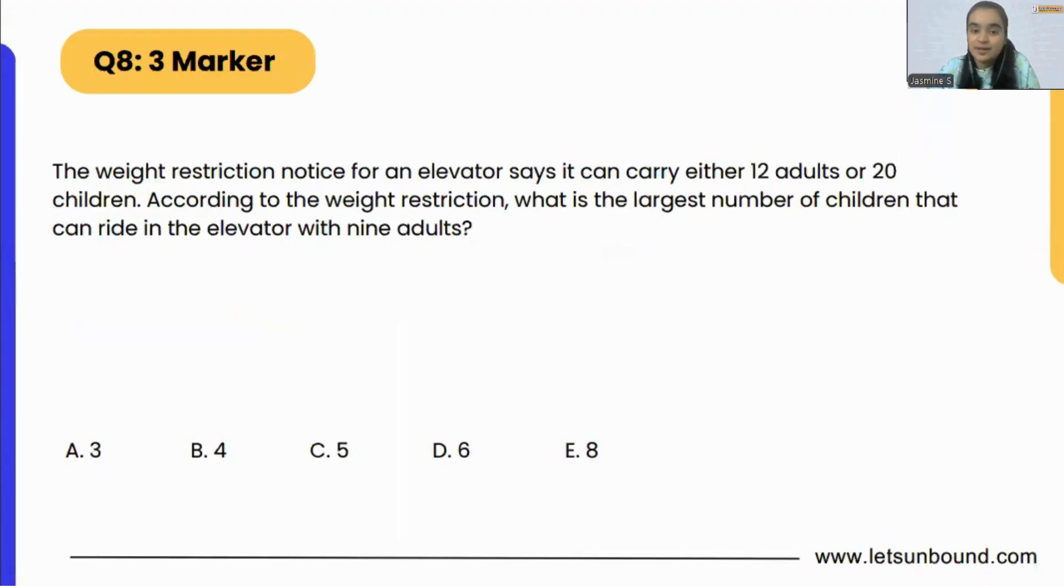The question says the weight restriction notice for an elevator says it can carry either 12 adults or 20 children. So in the elevator, either we can have 12 adults or 20 children.